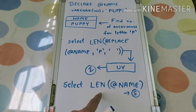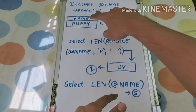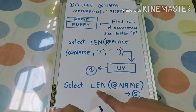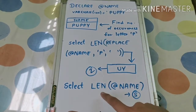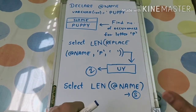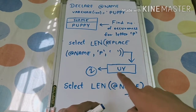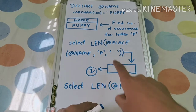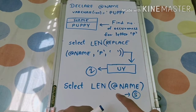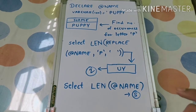Now if we write SELECT LENGTH(name) on the original column, it will give us five, since there are five letters in 'puppy'. To find the occurrences, we subtract the length of the replaced string from the actual length of the original column name.